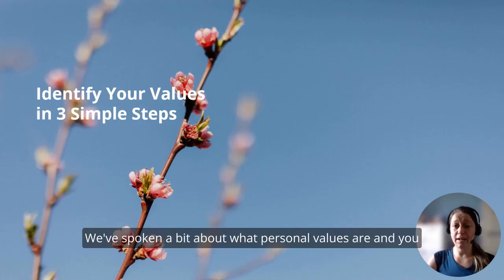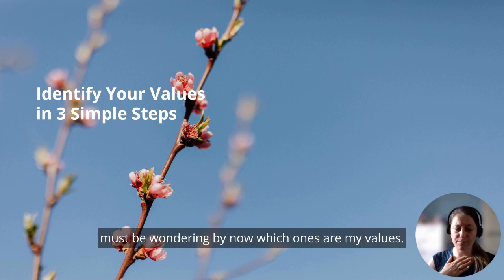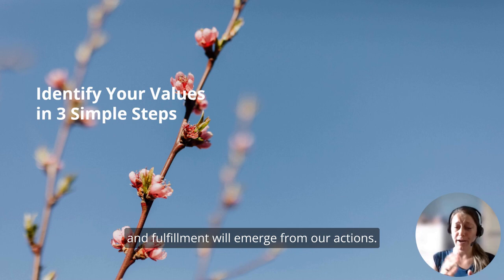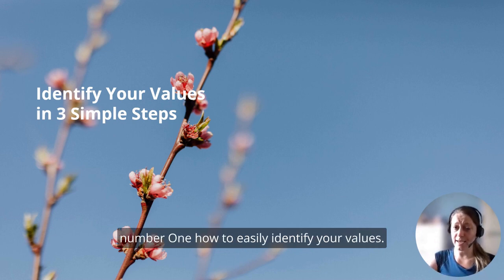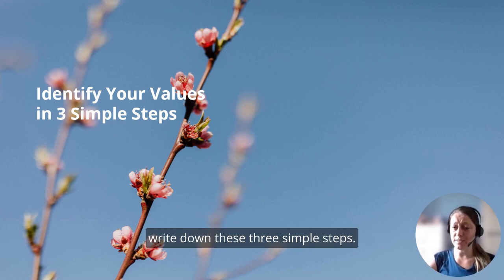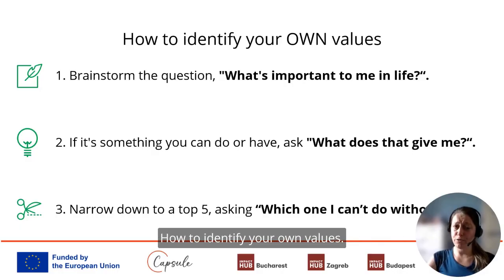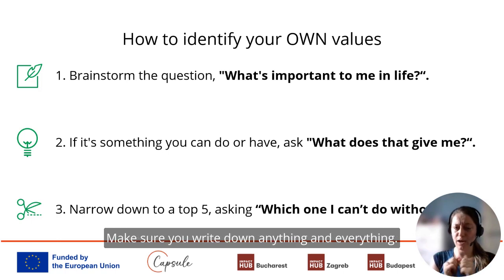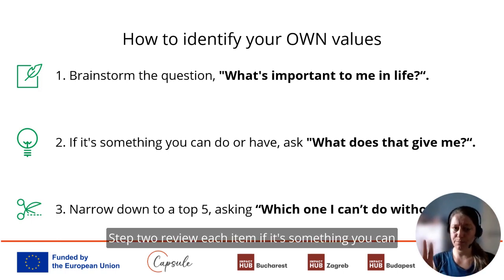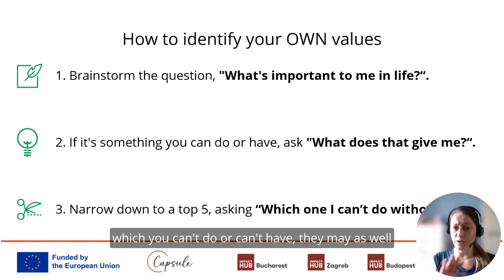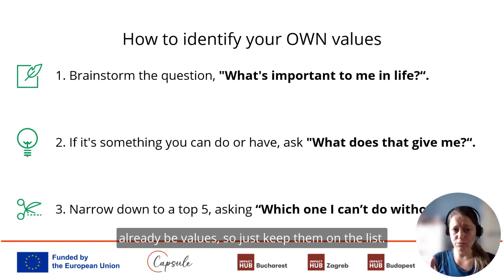You must be wondering by now: which ones are my values? Much like flowers emerging from the branches of a tree, our inner change and fulfillment will emerge from our actions. Here is Action Number One — how to easily identify your values. Grab pen and paper and write down these three simple steps, then answer each one thoroughly in your working journal. Step one: brainstorm on the question 'What's important to me in life?' Write down anything and everything. Step two: review each item — if it's something you can do or have, ask 'What does that give me?' Do this until you get to a value. For items you can't do or have, they may already be values, so keep them on the list.